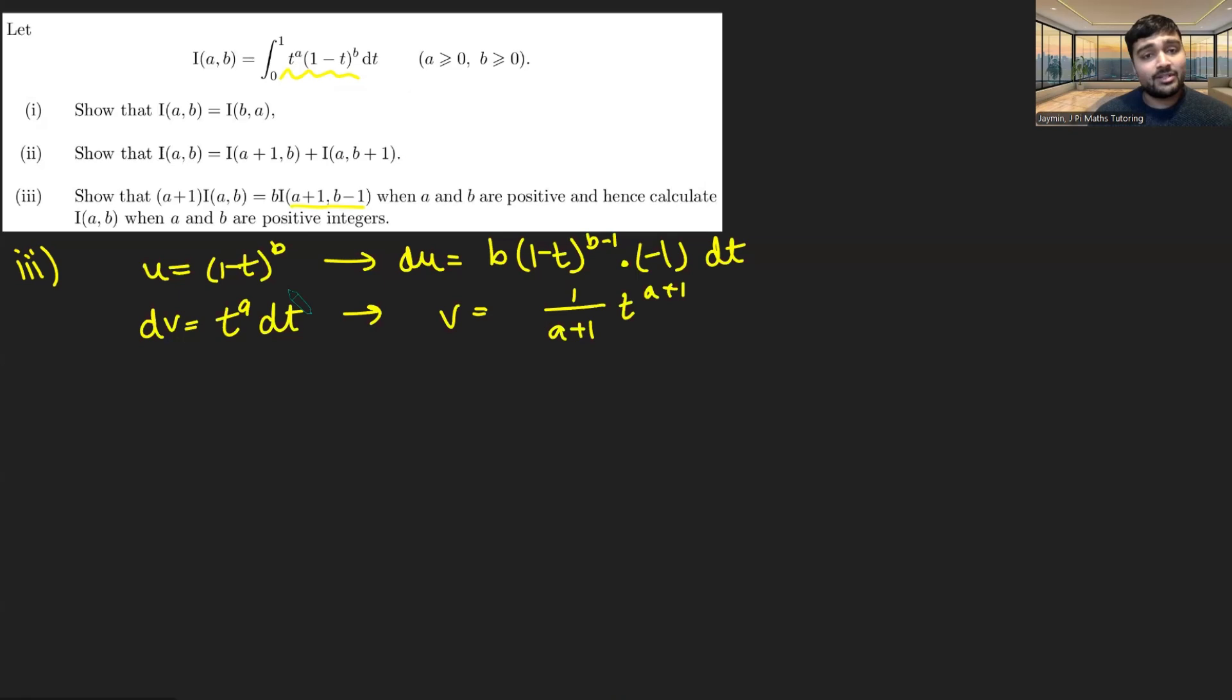This is just the standard setup for integration by parts. We're then going to have the I(a,b) equals, so u times v. So 1 minus t to the b times t to the a+1 over a+1 from 0 to 1, minus the integral from 0 to 1 of vdu. So this thing times this thing, but because of the minus 1 here, I can factor it out and make that a plus.